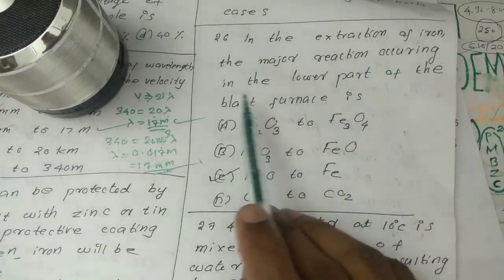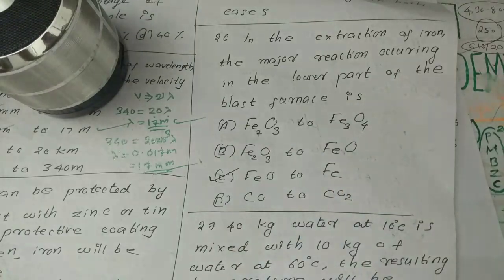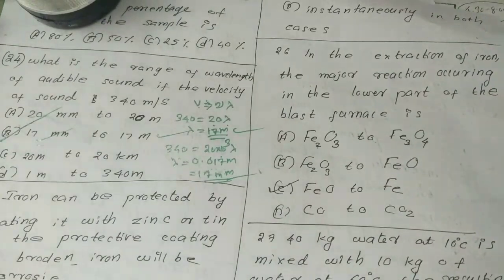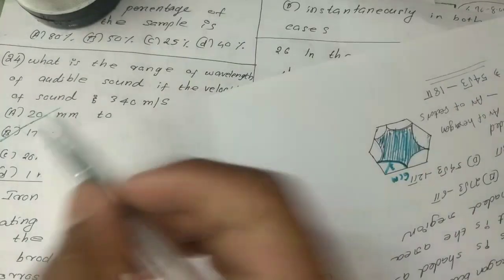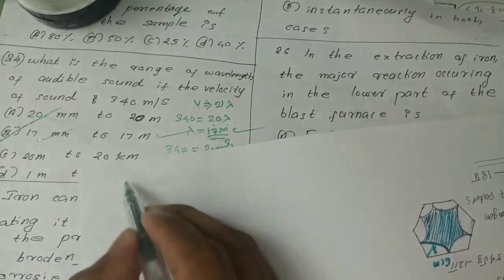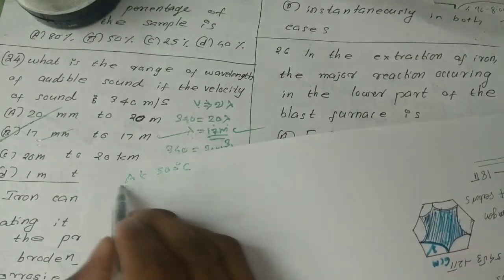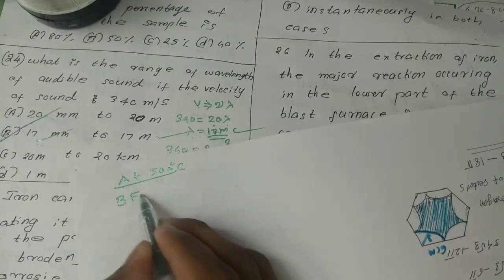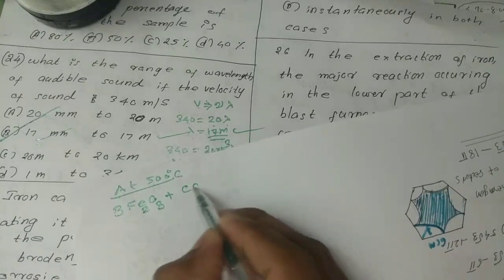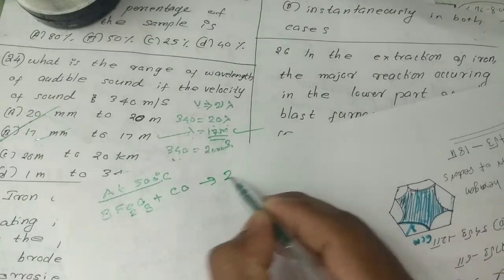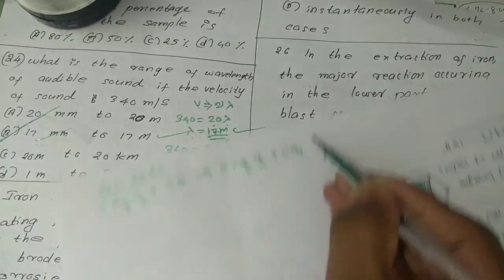In the extraction of iron, the major reaction occurring in the lower part of the blast furnace is the question. Fe3O4 plus CO gives Fe3O4 plus CO2.